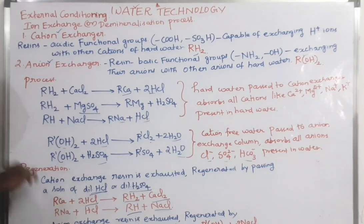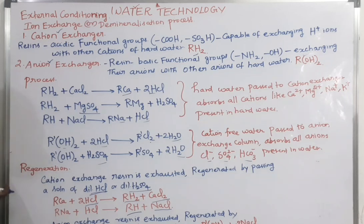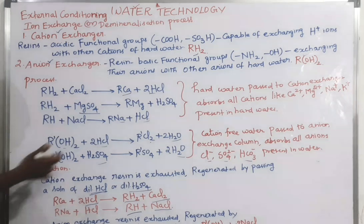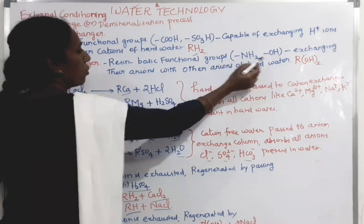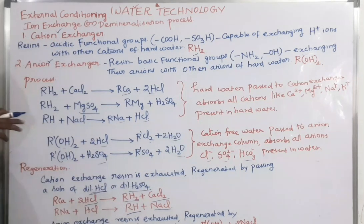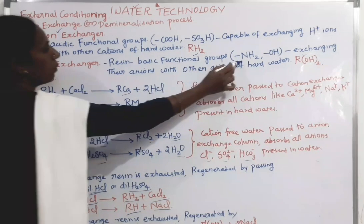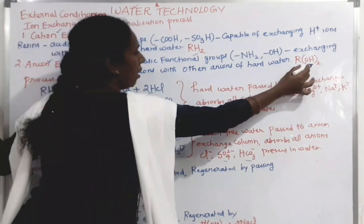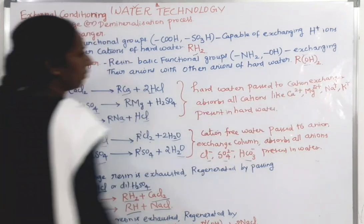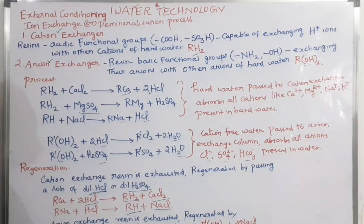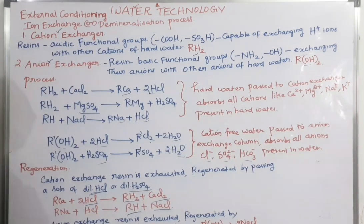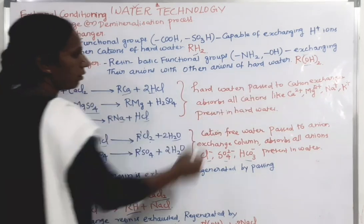The next one is the anion exchanger. The resins containing basic functional groups — that is, –NH2 and –OH — exchange anions with other anions of hard water. The representation is R(OH)2.